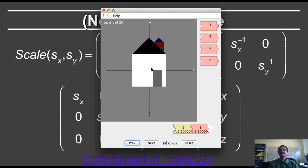And let me make it somewhat bigger. At this point, the house has been scaled by a factor of 3.5 in both the x and the y directions.